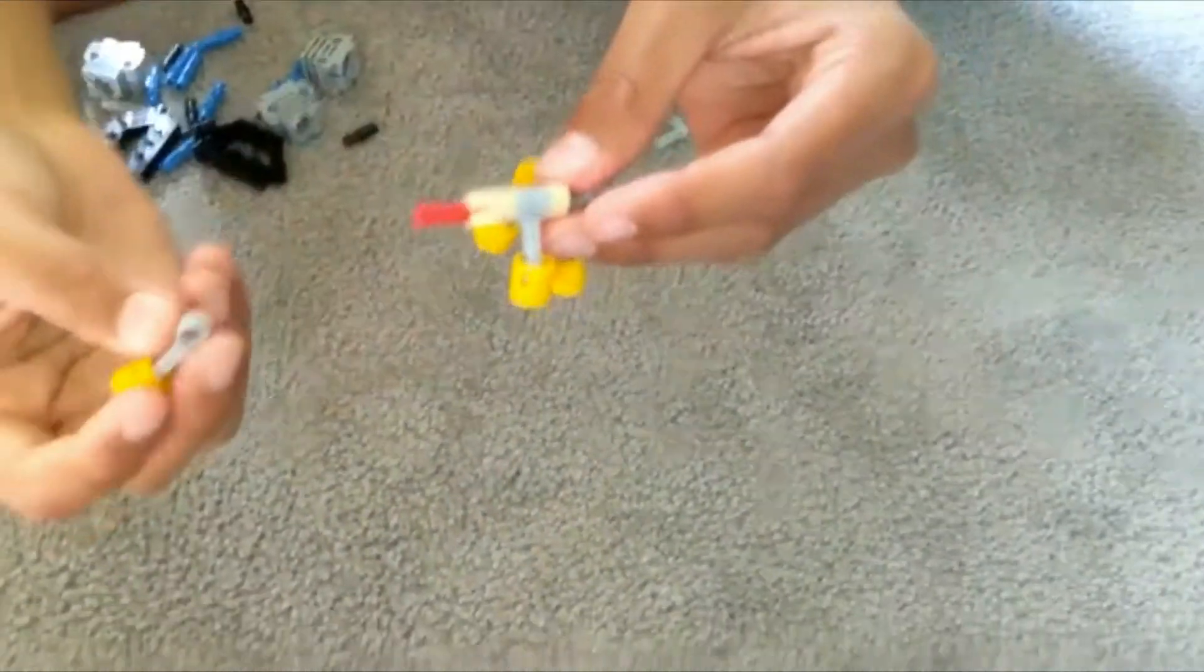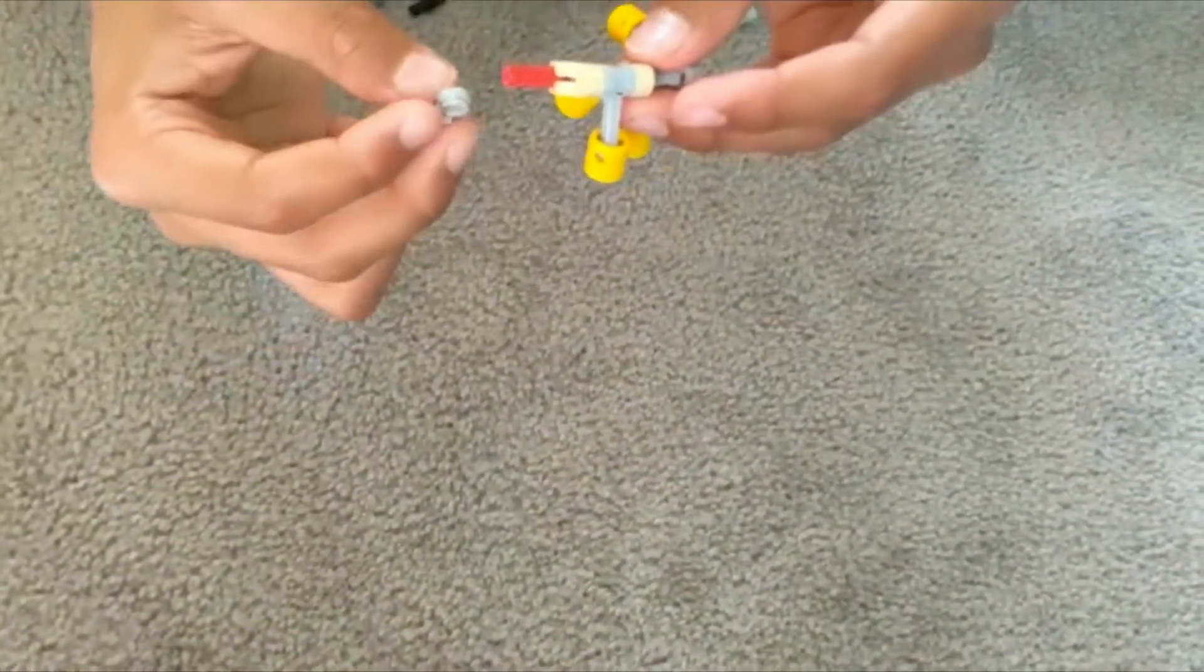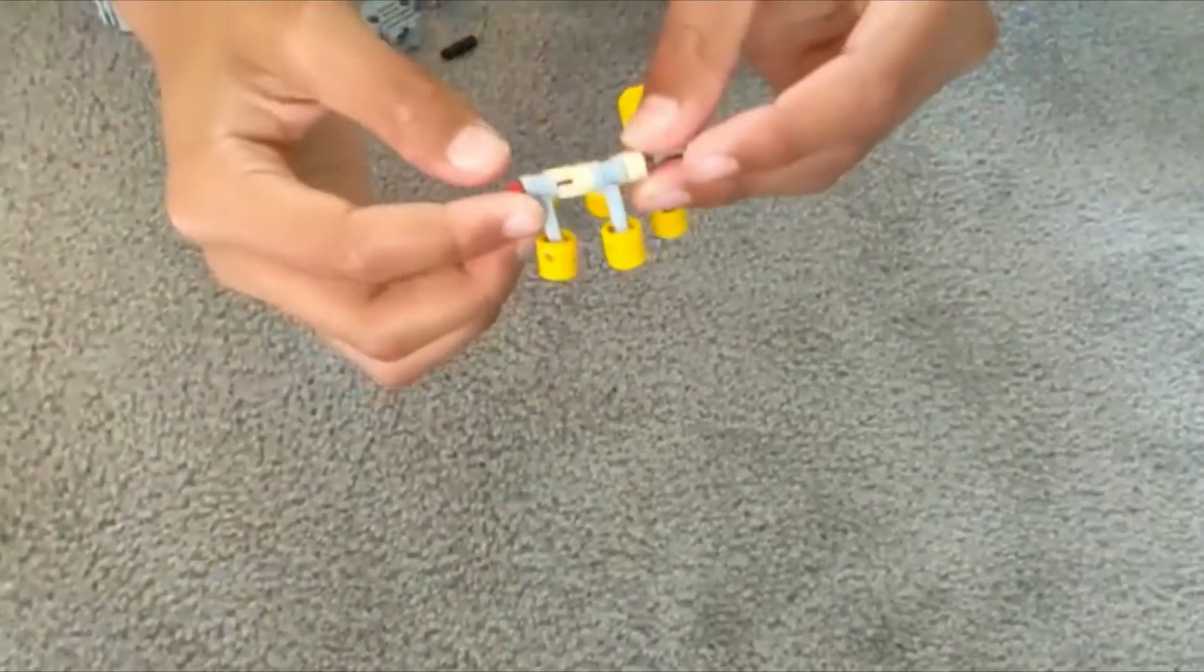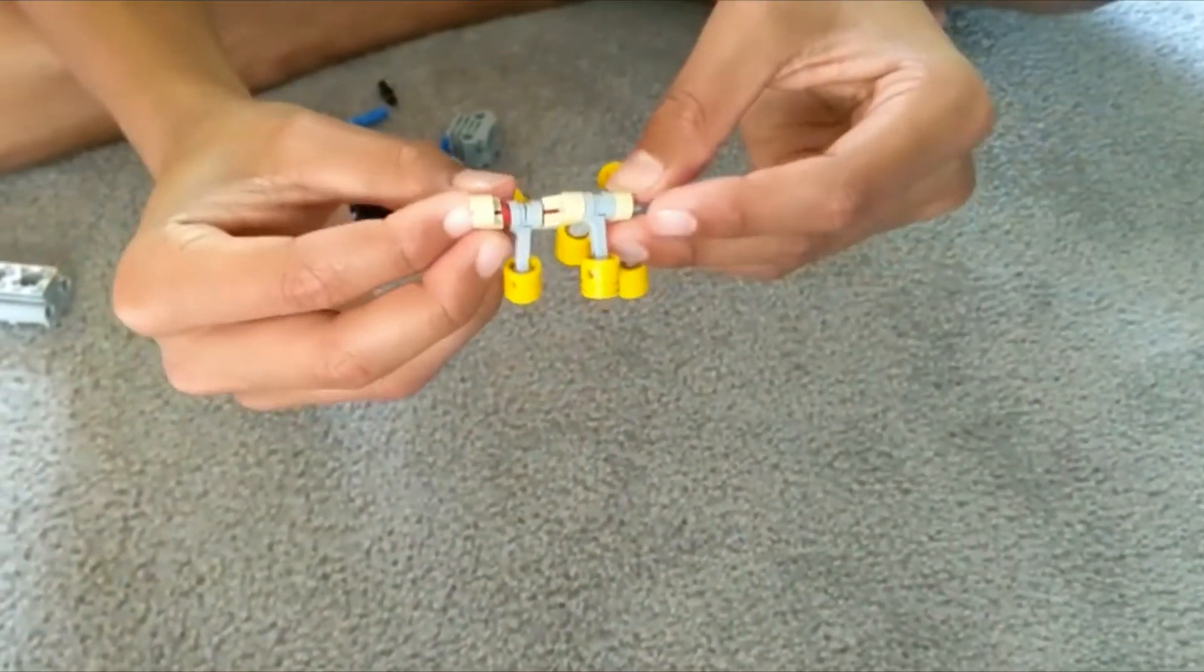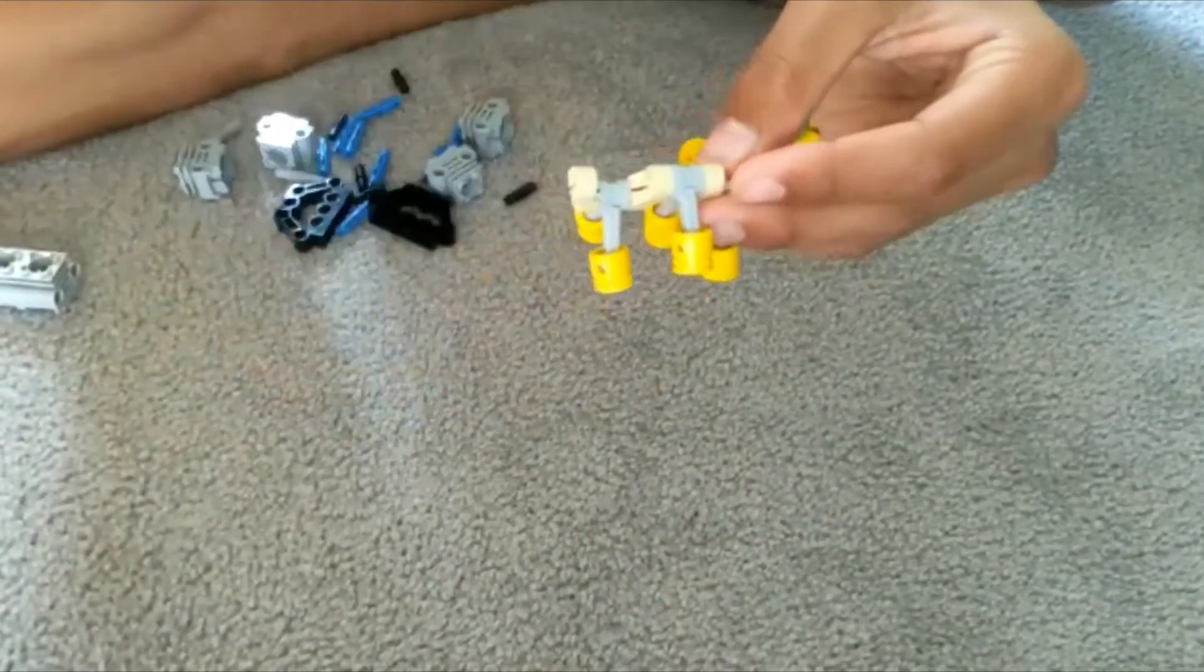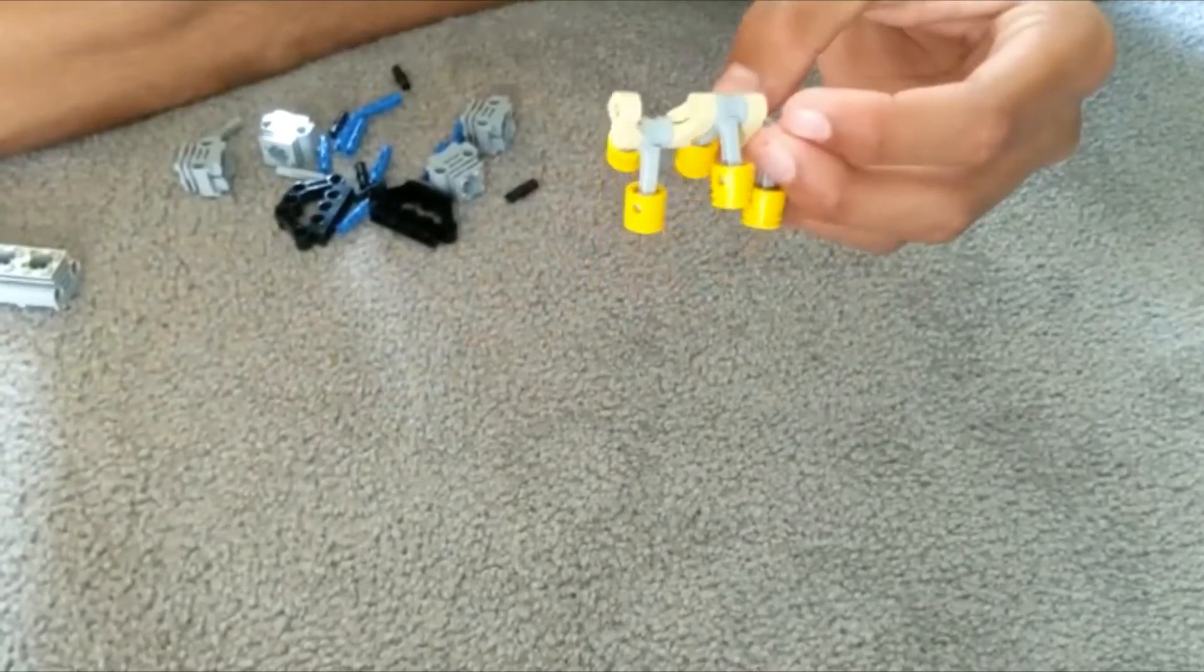Then put the 2 piston arms in, the same way you did for the previous four. As such. And again, finally, put the tan coloured piece in.